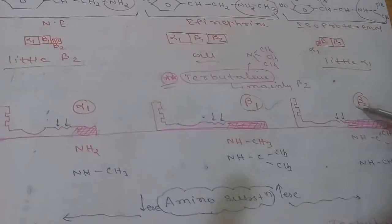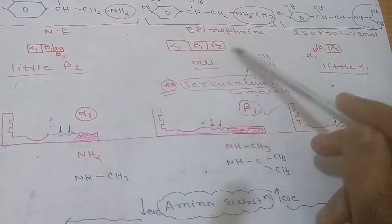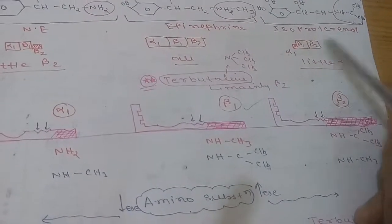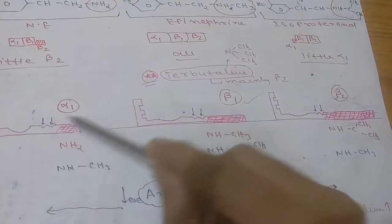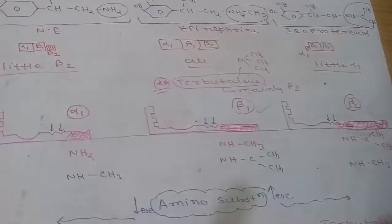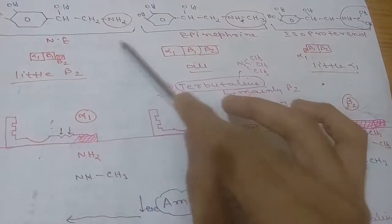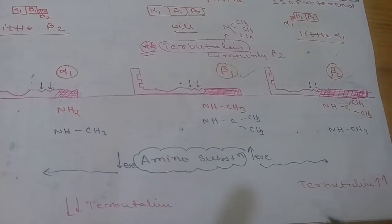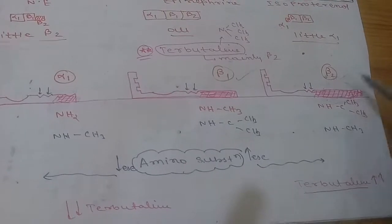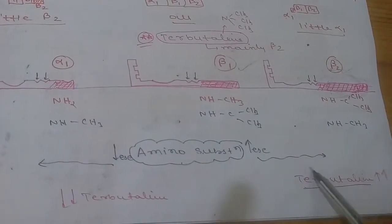Epinephrine has an intermediate-sized group, so it combines easily with alpha-1, beta-1, and beta-2 — it has all three activities. Isoproterenol has mainly beta-1 and beta-2 activity with very little alpha-1 affinity because its bulky group is not suitable for the alpha-1 binding site. Terbutaline has an even heavier group than isoproterenol, so it binds more easily to beta-2 and has less affinity for alpha-1.